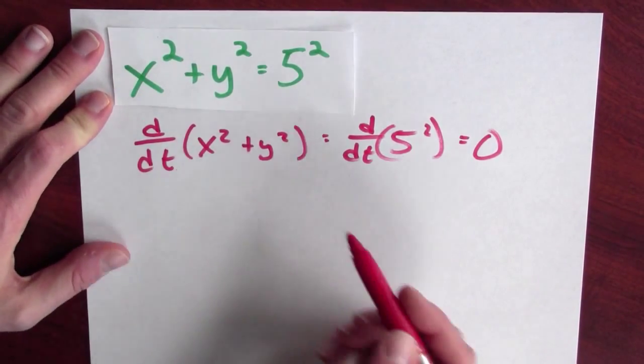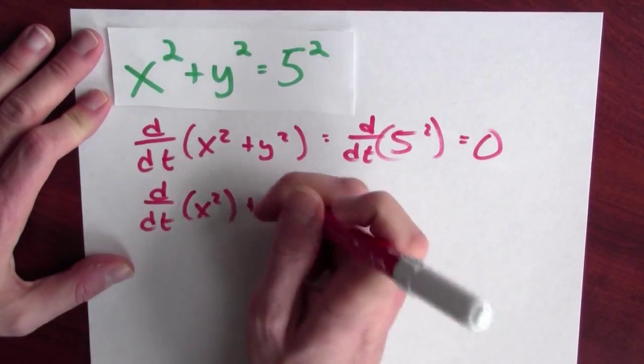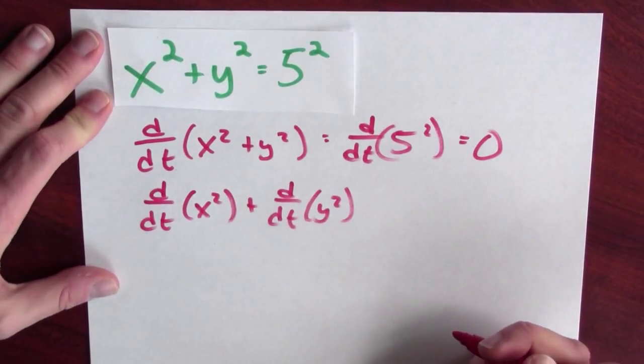How do I differentiate x squared plus y squared? Well, that's the derivative of a sum, so it's the sum of the derivatives. It's d dt x squared and d dt y squared.